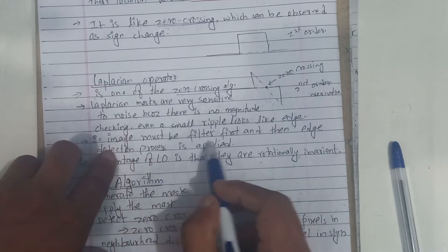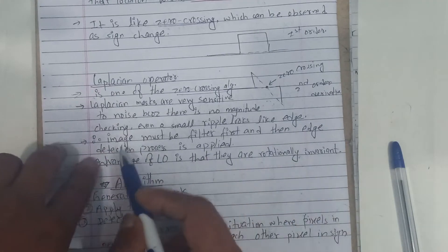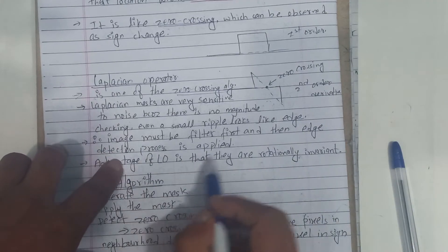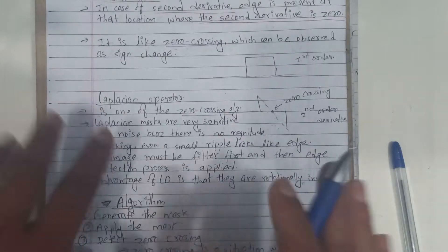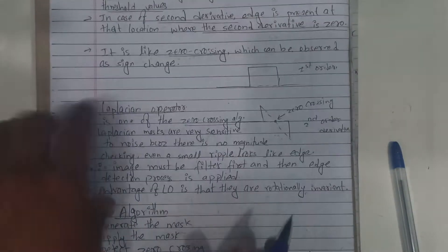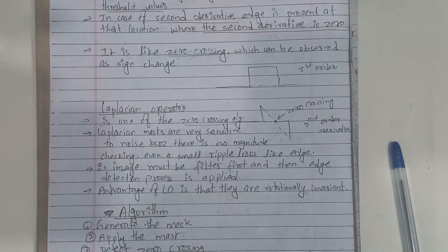The image must be filtered first, and then the edge detection process is applied. Second order derivative sensitivity is a problem.